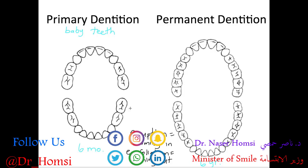So again: at about six months we start getting eruption of primary teeth; by six years we start getting eruption of permanent teeth; and it takes until about 12 years for the last baby teeth to be exfoliated and completely replaced. This transition period from about six to 12 years old is called the mixed dentition — when we have a mix of both primary and permanent teeth. It takes a little longer for the third molars, which may come in as late as 18–20 years old.